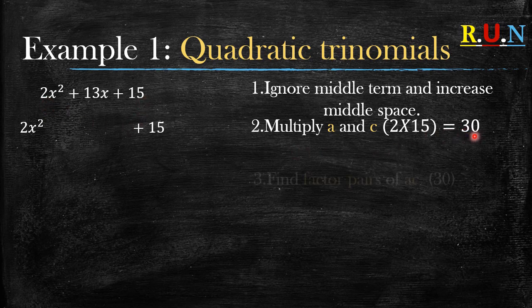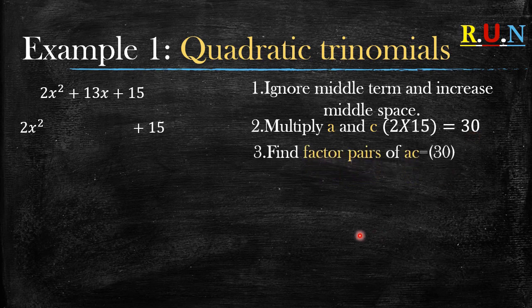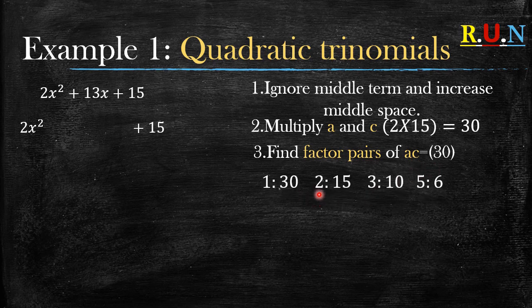Rule number three: find factor pairs of a×c, which is 30. Here are the factor pairs. If you don't know how to find these, watch the previous video which I'll be putting in the description below.